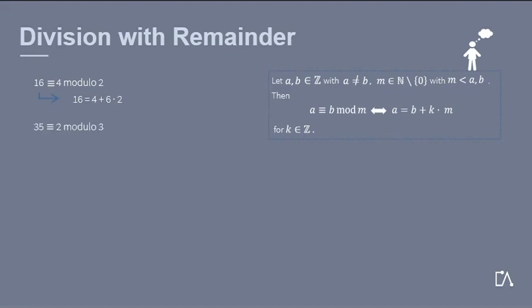It is also true that 35 equals 2 modulo 3, since 35 can be written as 2 plus 11 times 3. Does 42 equal 11 modulo 5 also hold? No. Because there is no integer k such that 42 equals 11 plus a multiple of 5.